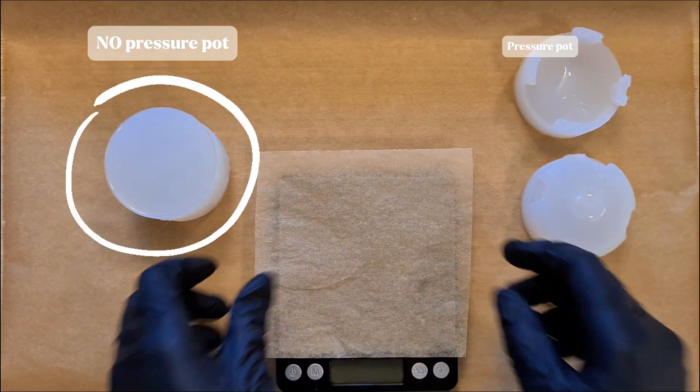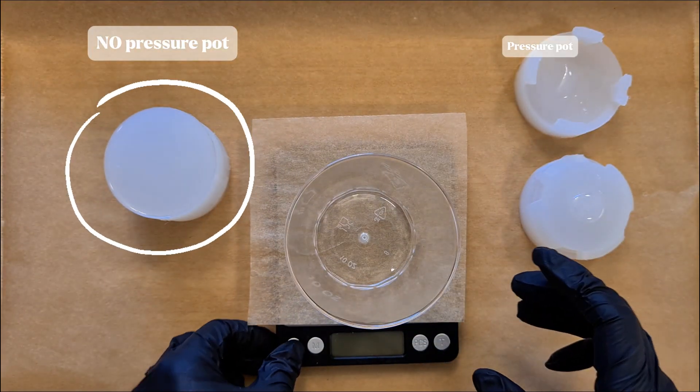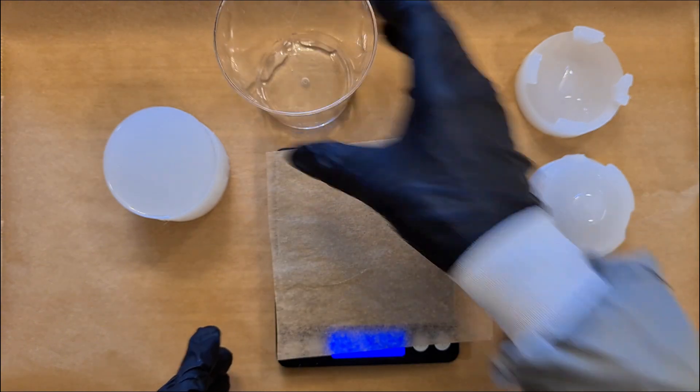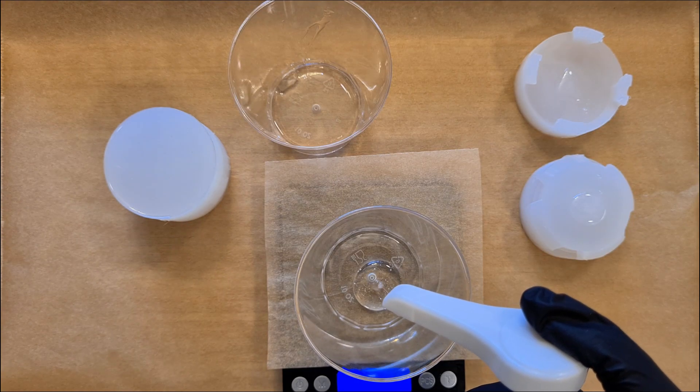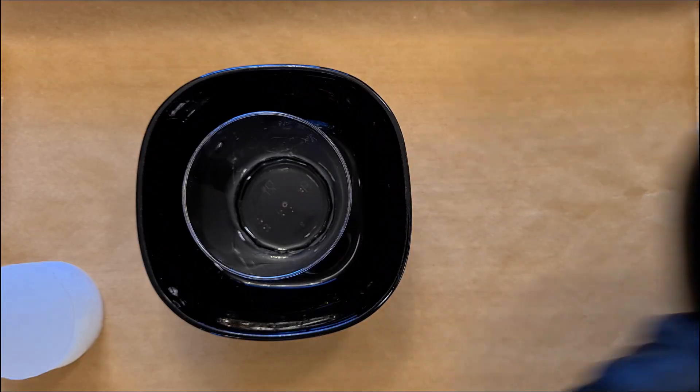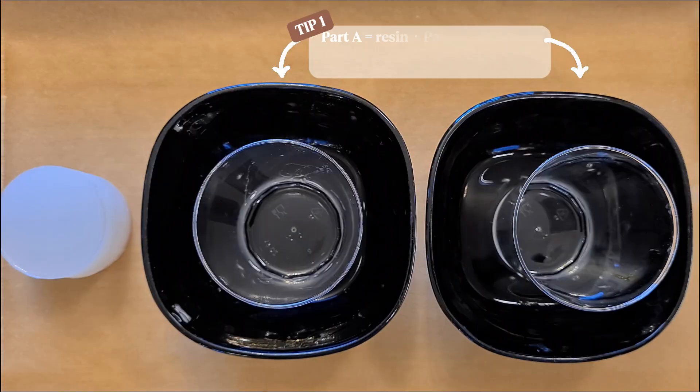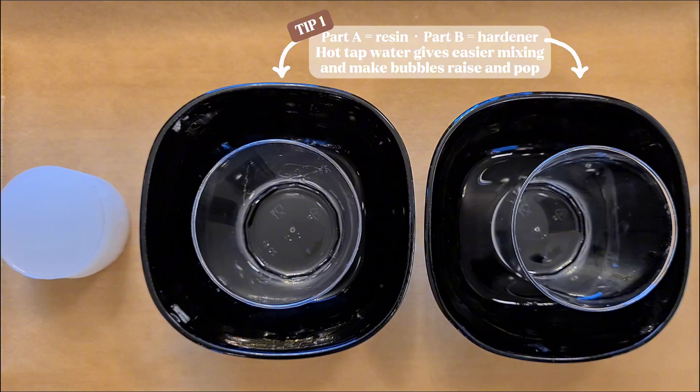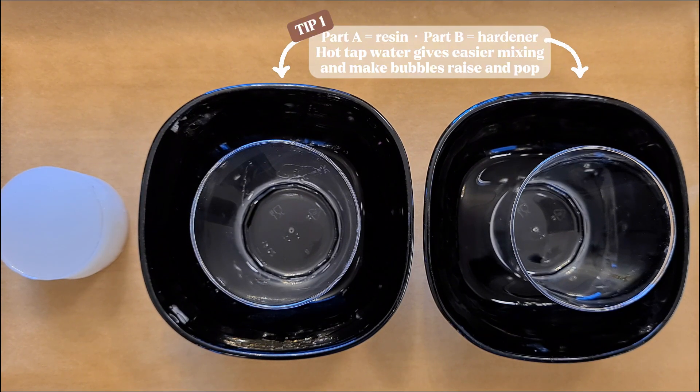I will go ahead and mix the resin for the no pressure pot mold. And this time, I will actually mix the hardener and resin into different plastic cups, that I then will put in these bowls with hot tap water. And this will just make them so much easier to mix, and make all of the bubbles we created when pouring them into the cups raise up to the surface and pop.